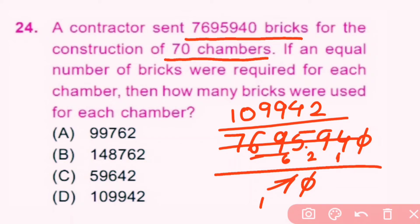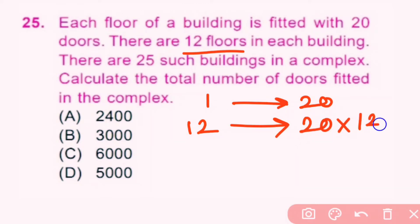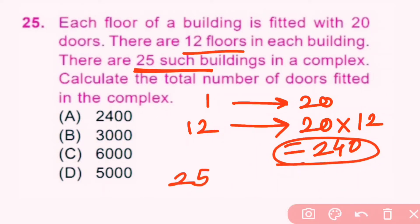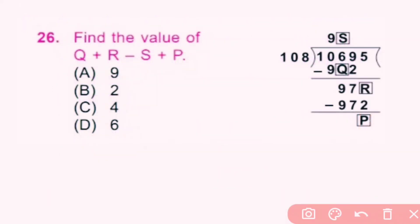Question number 25: Each floor of a building is fitted with 20 doors. There are 12 floors in each building and 25 such buildings in a complex. Total doors per building: 20 × 12 = 240 doors. For 25 buildings: 25 × 240 = 6,000 doors total. C is the correct answer.